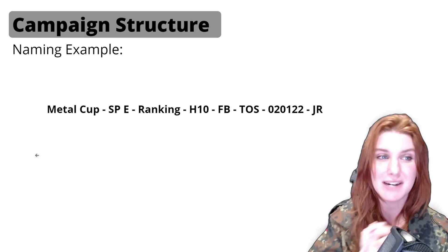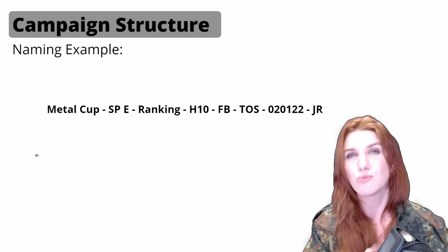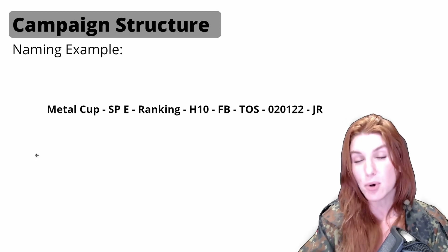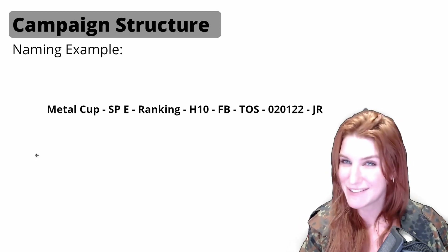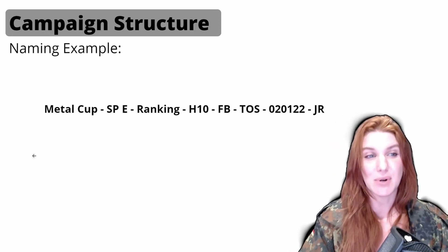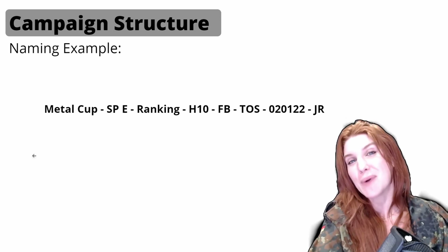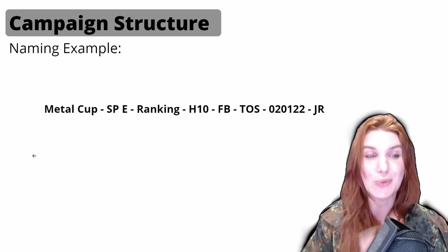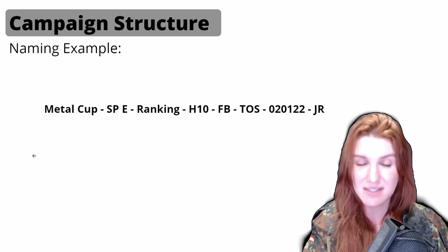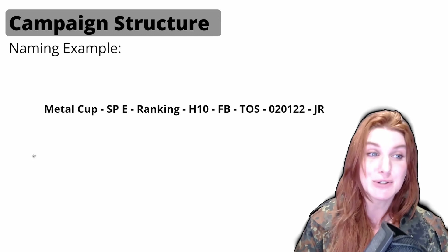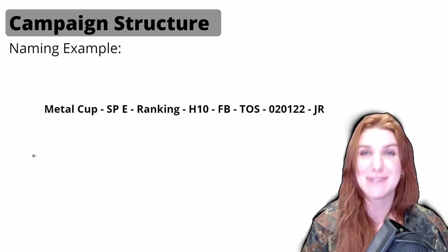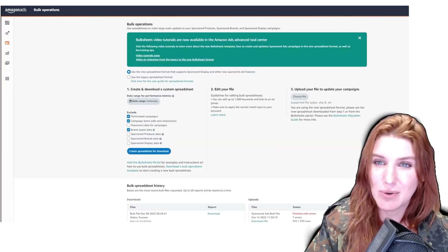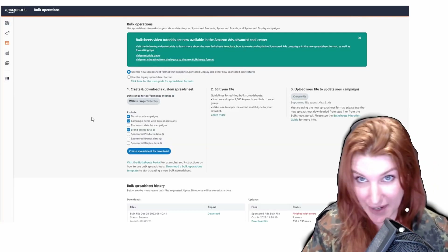Your question might be: 'Okay, I know what campaign name structure I want, but I have a conglomeration of old campaigns with poor naming that I haven't taken care of.' Well, I have really good news. If you're not aware of bulk files, they are something I know and love for campaign management. Amazon put out bulk files 2.0 this year, and there's a new option in it: renaming your campaigns. It's one of the biggest updates I'm most excited about.